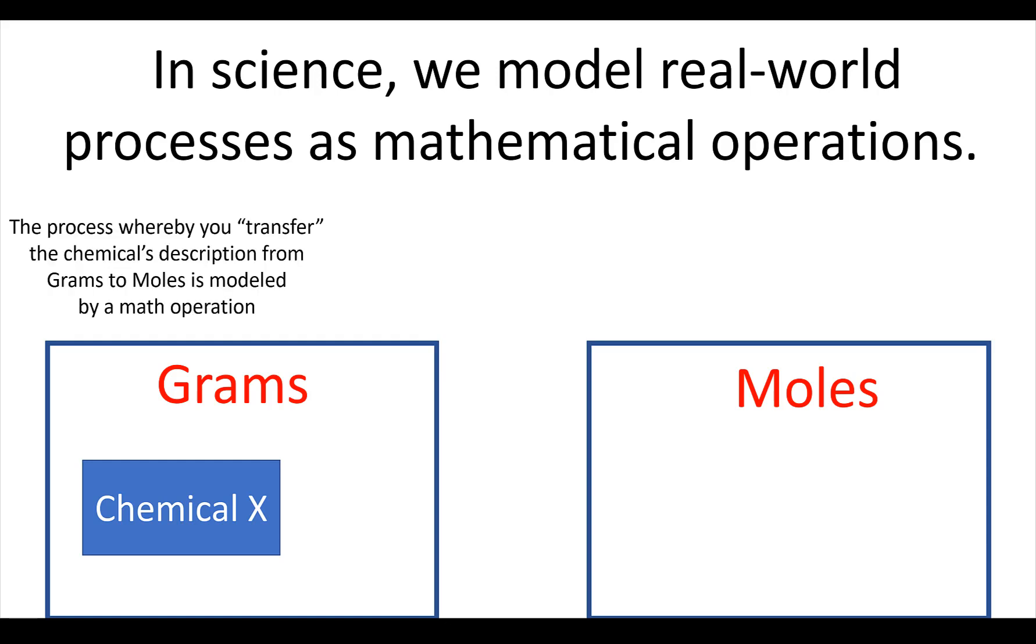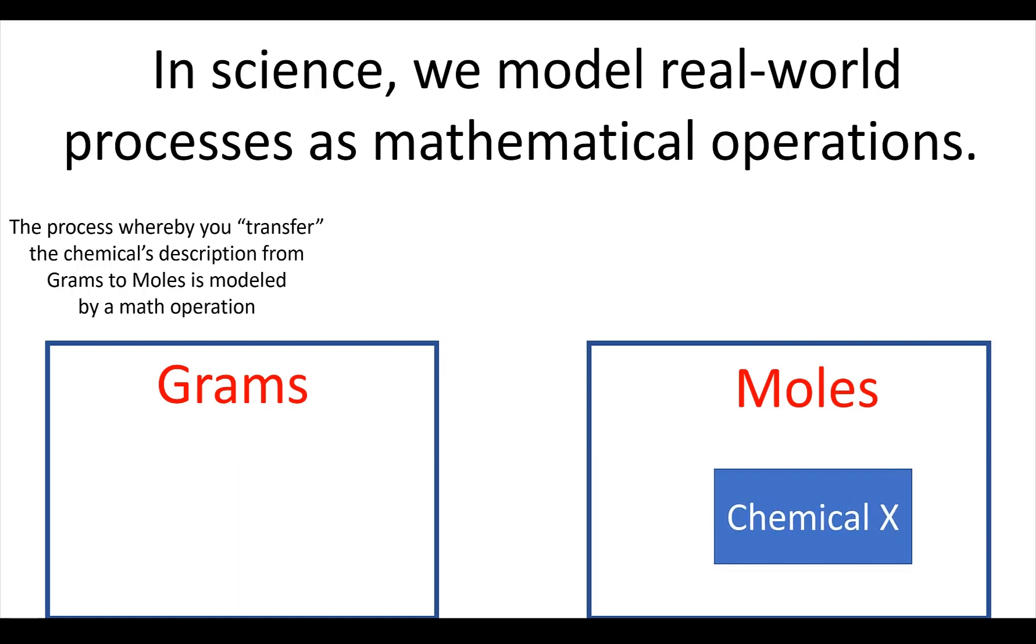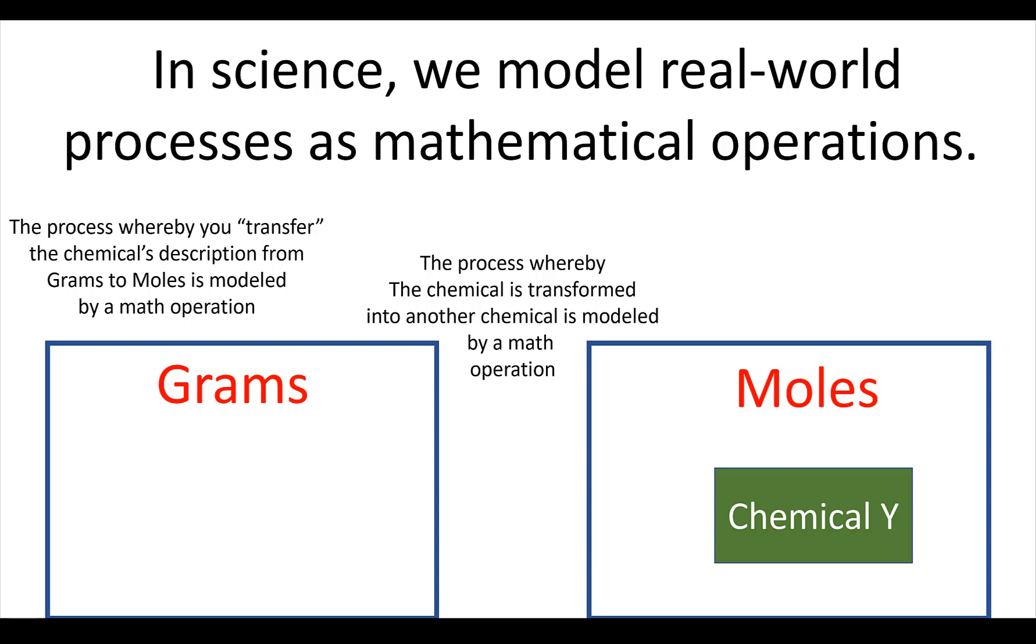So the process by which you transfer a description from grams to moles, this is a mathematical operation. The process by which you take a chemical and you figure out its connection to another chemical, we model that with a mathematical operation.